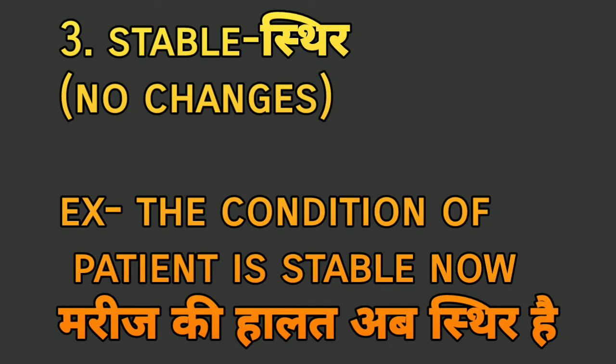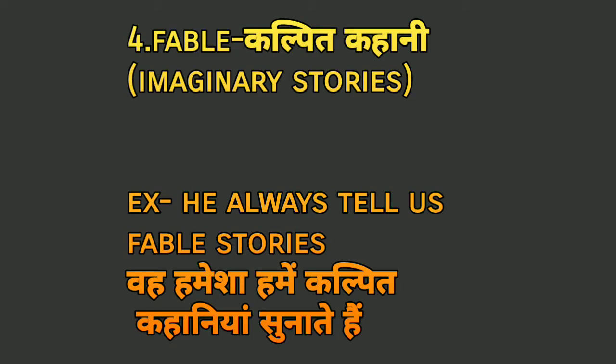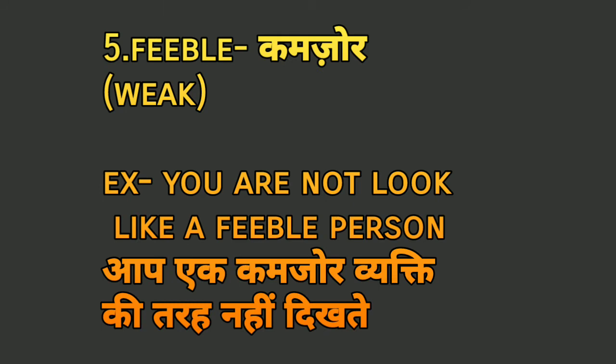Don't forget to subscribe to my channel — channel ko subscribe karna na bhule. The next word is 'fable', meaning 'kalpit kahani' — an imaginary story. For example: 'He always tells us a fable story' — woh hamisha hame kalpit kahaniyan sunate hain. Next, 'feeble' means 'kamzor' — weak. For example: 'You do not look like a feeble person.'